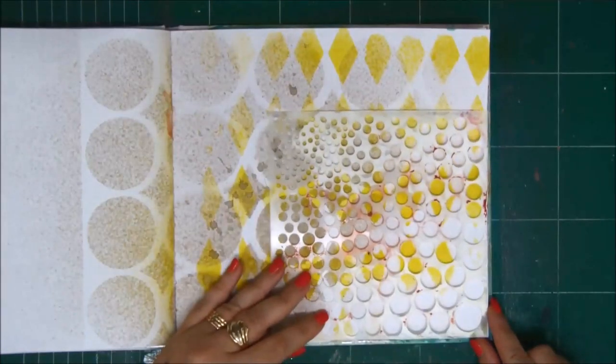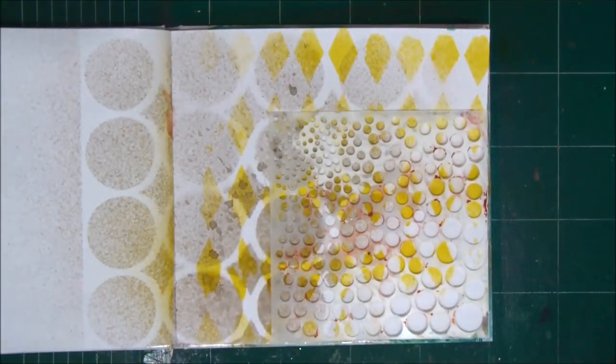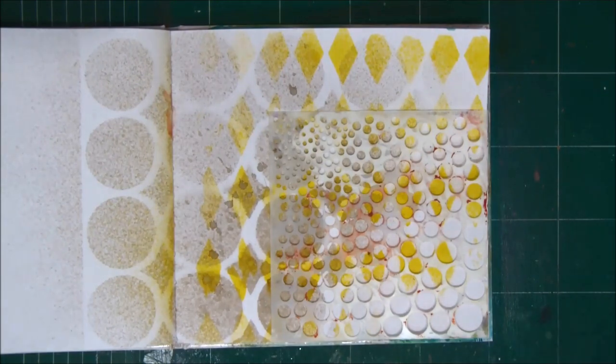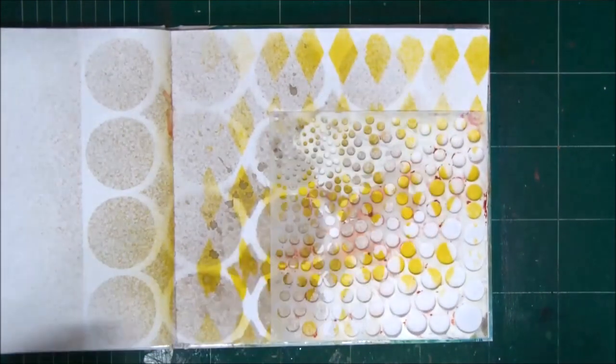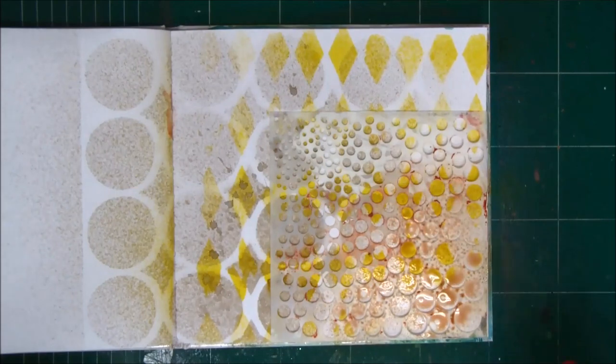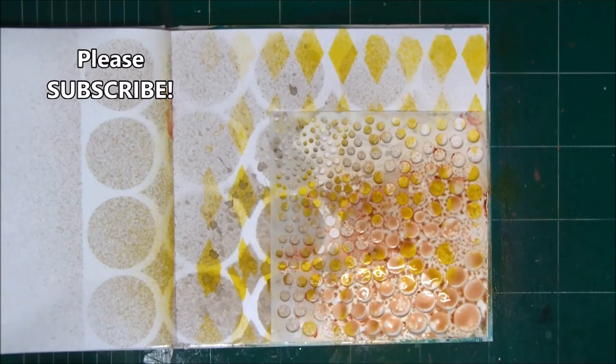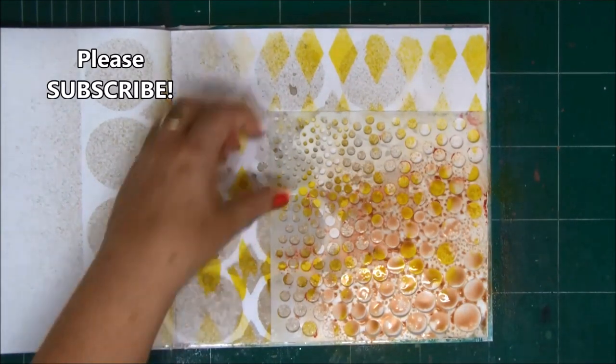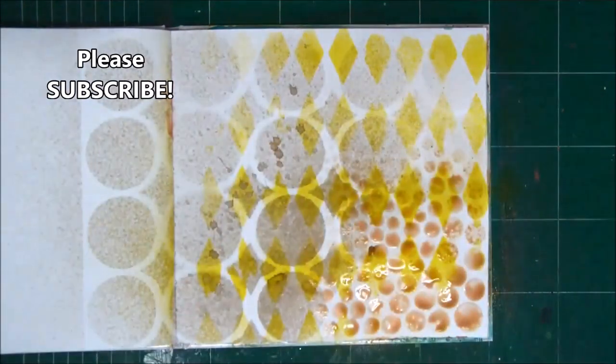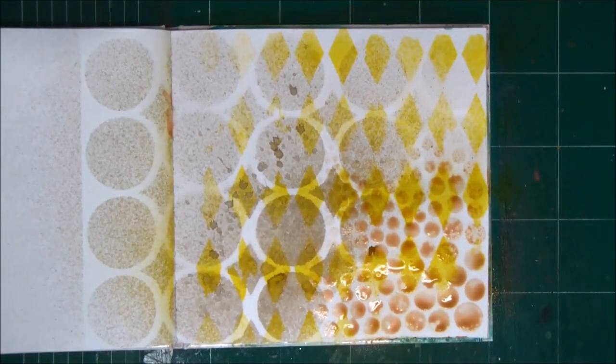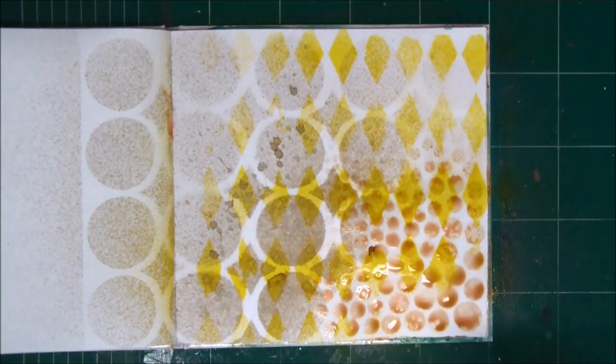Now I'm going to change the stencil again and change the color of the spray again. This is layer number three. Again different color and it's important to dry it with your heat tool. Just let it sit there until it's dry.